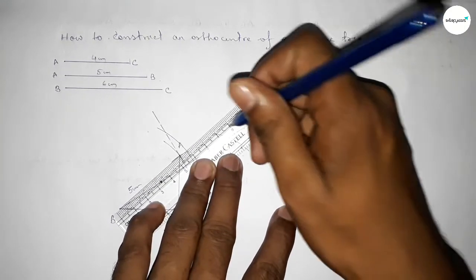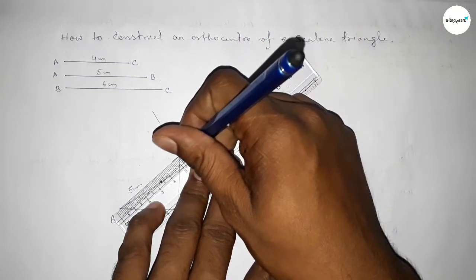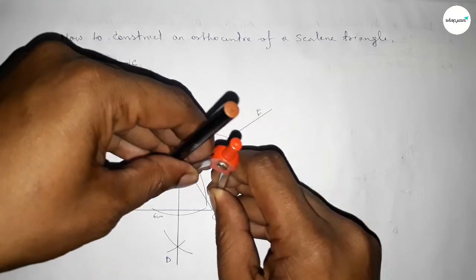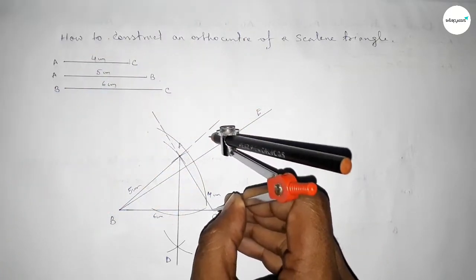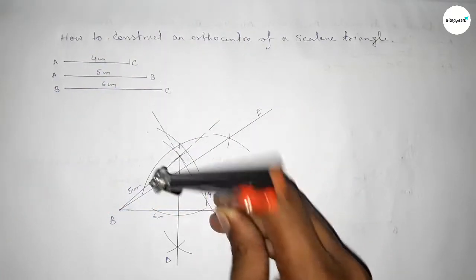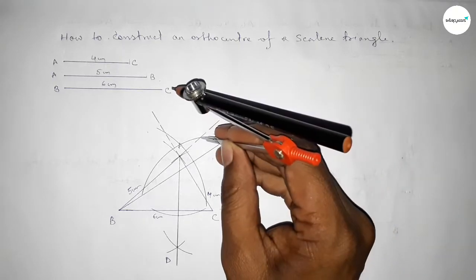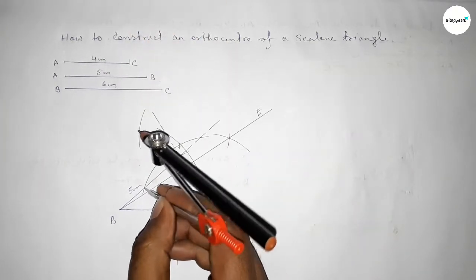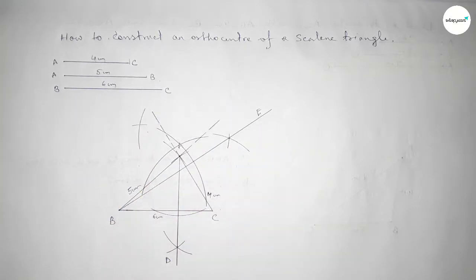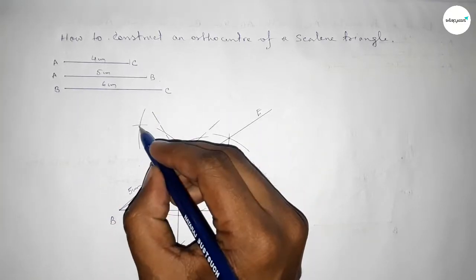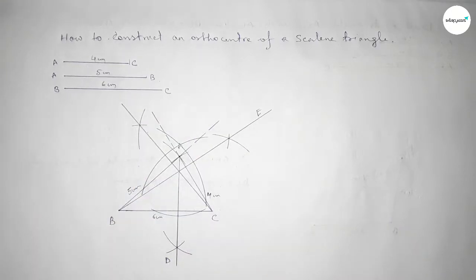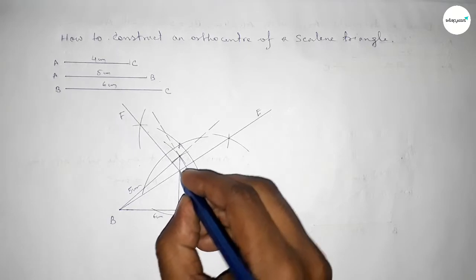Next we have to draw a perpendicular line from point C to the AB line, so extending this line. Putting the compass on point C and taking any length, drawing an arc. Putting the compass on each intersection, taking greater than half and drawing arcs. Both curves intersect at a point. Joining this perpendicular line and taking here point F.